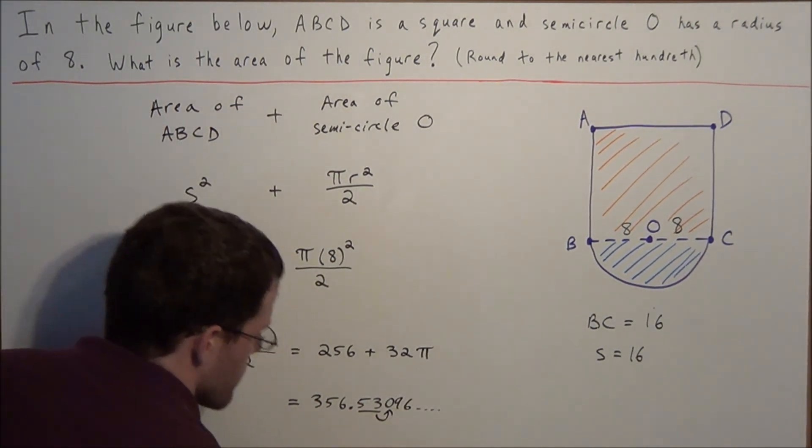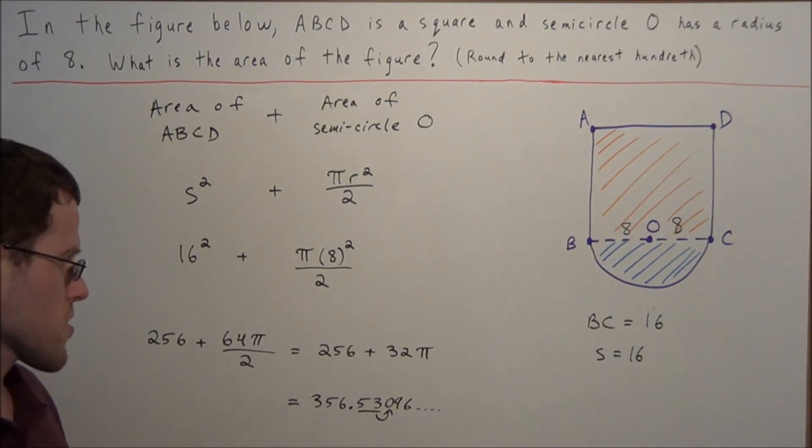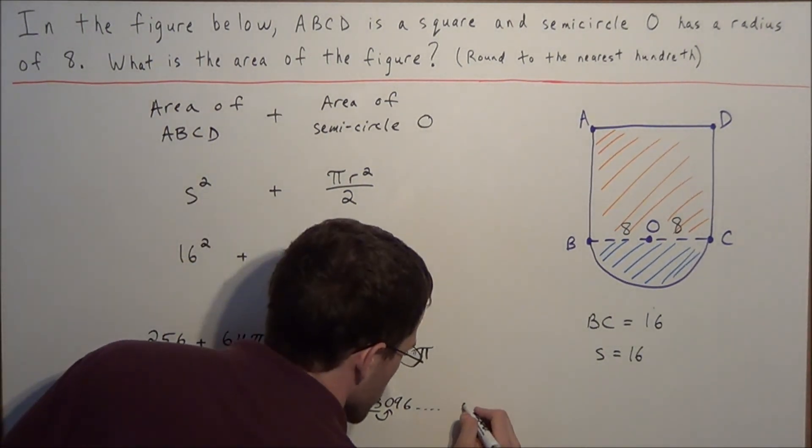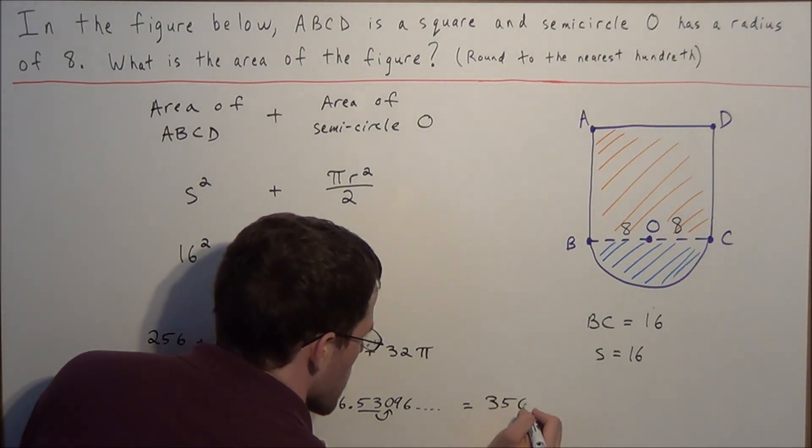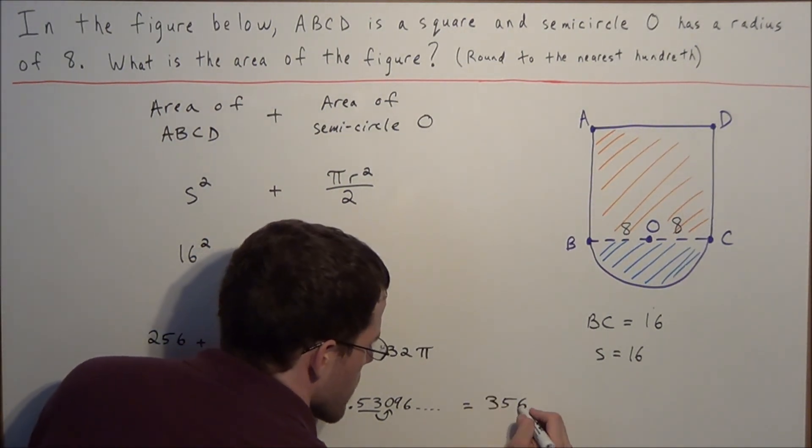So we focus up to the hundredths place. We look one digit to the right. The fact that it's a zero tells us to round down. So our final answer is 356.53.